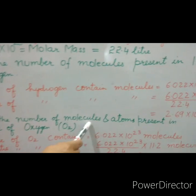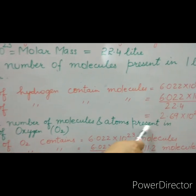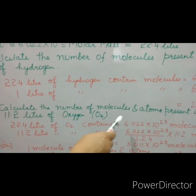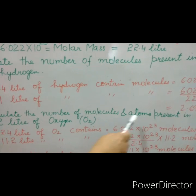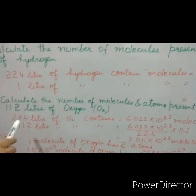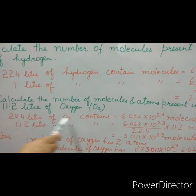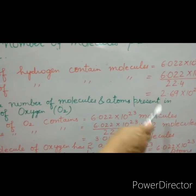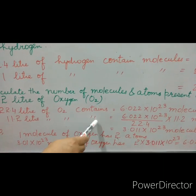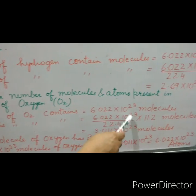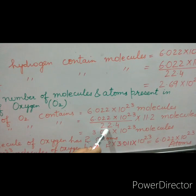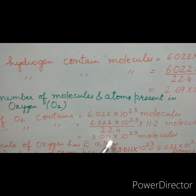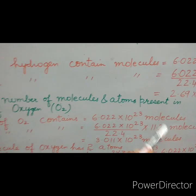Second question: calculate the number of molecules and atoms present in 11.2 liters of oxygen. We have to calculate molecules as well as the atoms which comprise the molecule. We know that 22.4 liters of oxygen will contain 6.022 × 10²³ molecules. Then 11.2 liters of oxygen will contain 6.022 × 10²³ divided by 22.4, multiplied by 11.2, which gives 3.011 × 10²³ molecules.